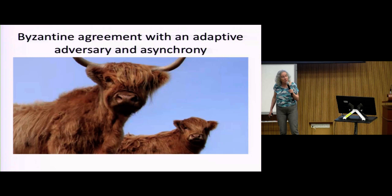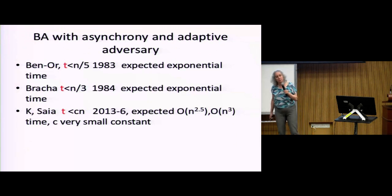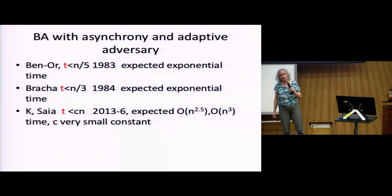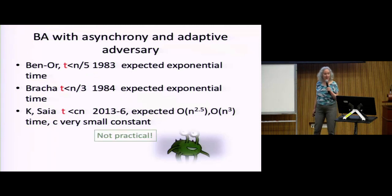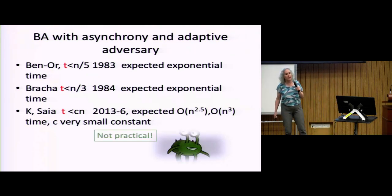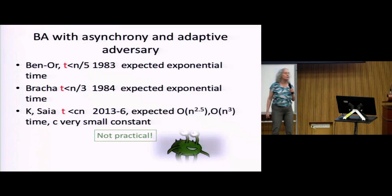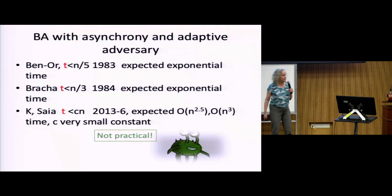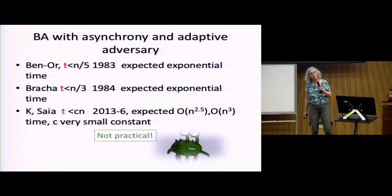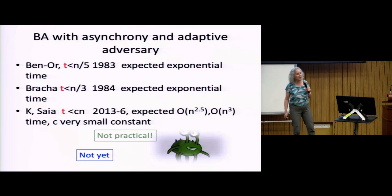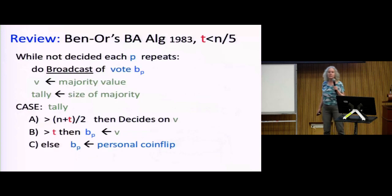The final topic is Byzantine agreement with an adaptive adversary in a fully asynchronous environment — essentially the original problem Ben-Or addressed with his exponential-time algorithm. There are only two preceding papers: Ben-Or and BRCA, and then our paper. It works for a constant fraction of bad guys, but the constant is so small — something like 10 to the minus 9 — that it's not yet practical. We're working on a practical version.